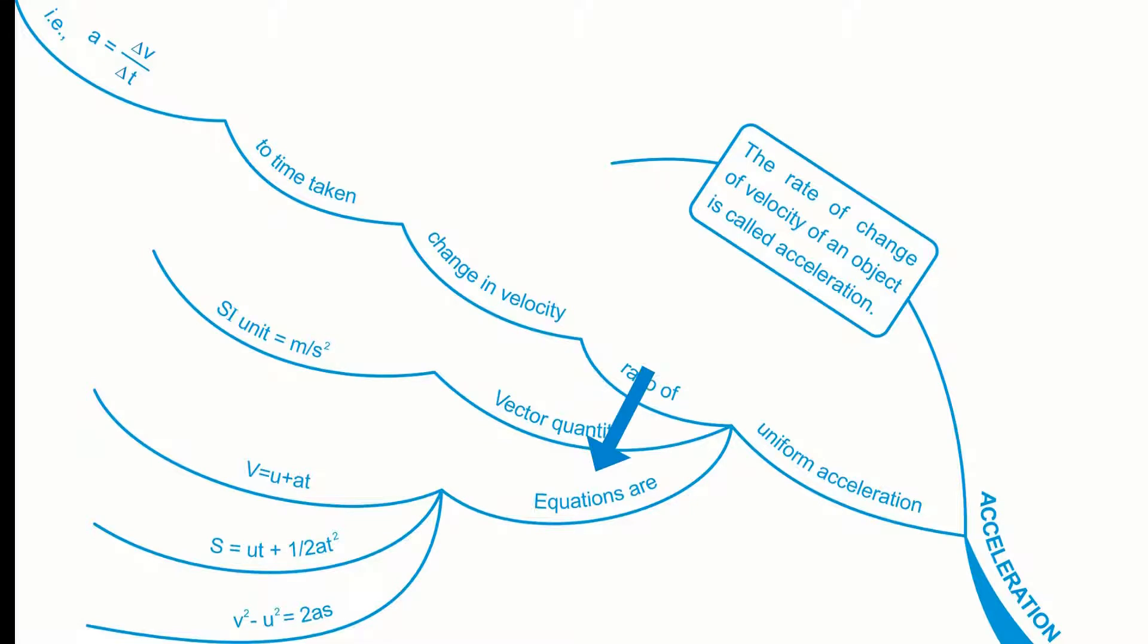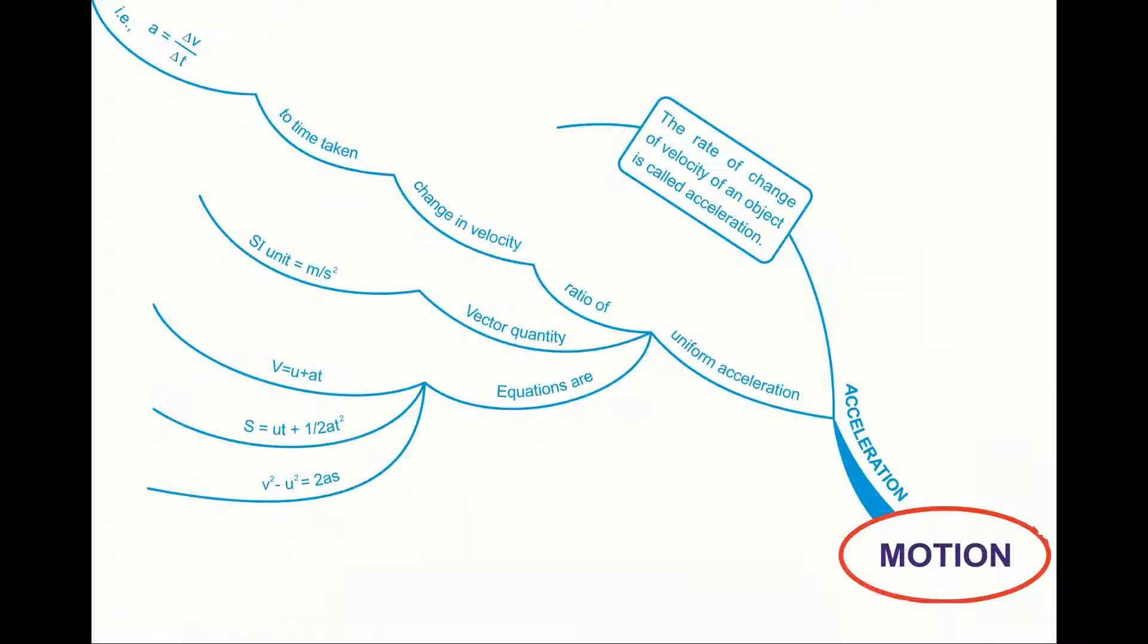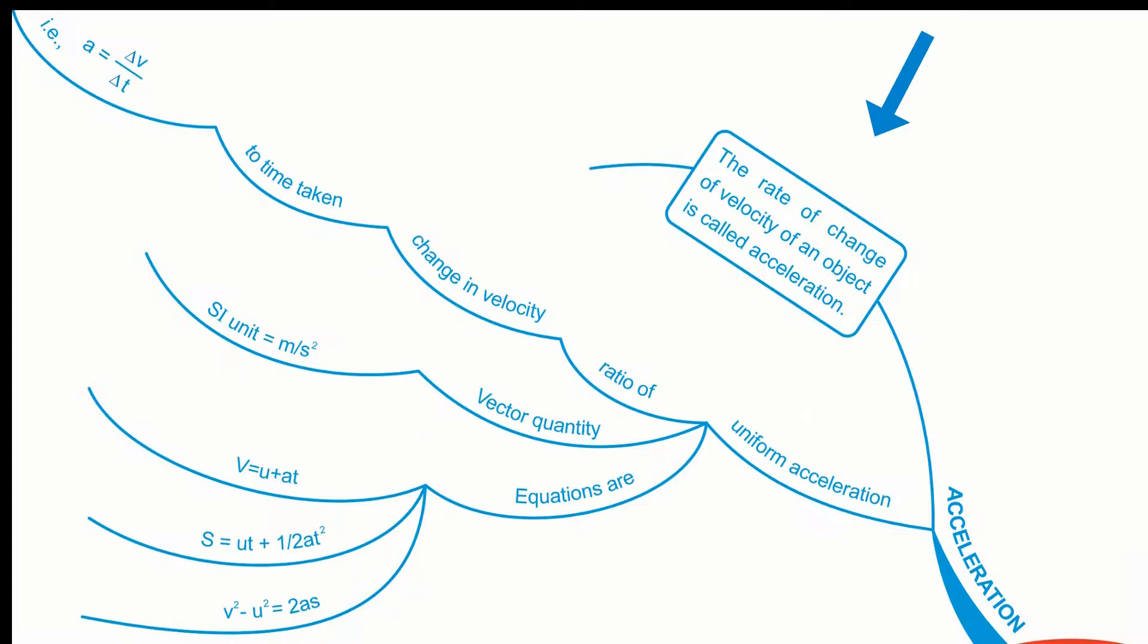Equations. Let us understand the concept of acceleration. The rate of change of velocity of an object is called acceleration. Uniform acceleration is the ratio of change in velocity to time taken, that is, a = Δv...